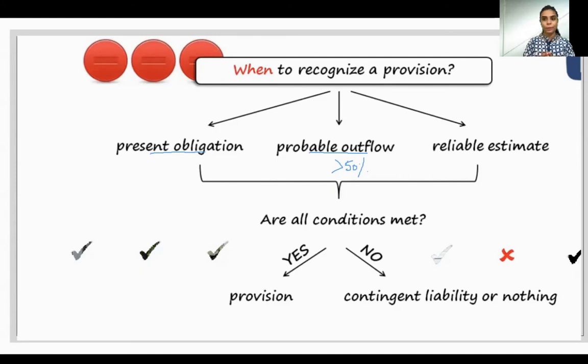For example, suppose somebody filed a case on me. Now I am sure that that person has filed a case on me. So my present obligation toh banh jayega na? So if I lose the case, mujhe patah hai, mujhe kuch payse dene padehenge.